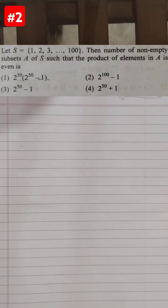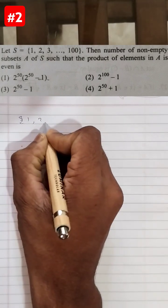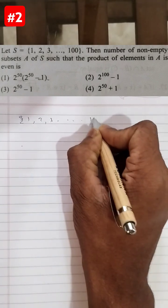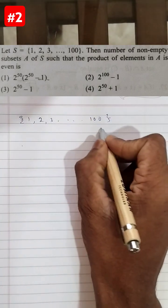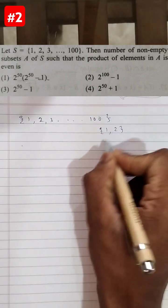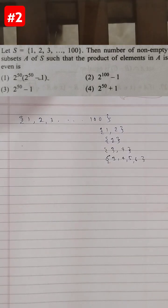This question is also an easy question. You can read it by pausing the video. We know that the set is actually {1, 2, 3, ...} and it goes on to 100. So there can be many subsets like {1, 2} or {1}. So how do we find the total number of subsets possible for this set?